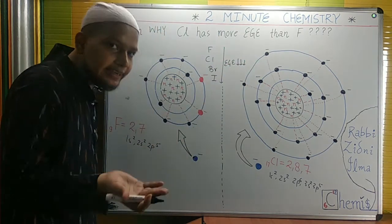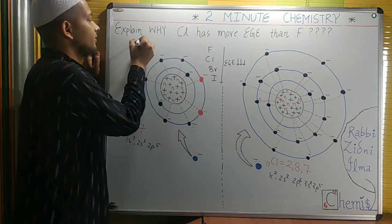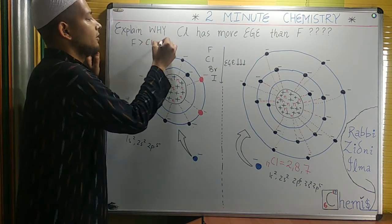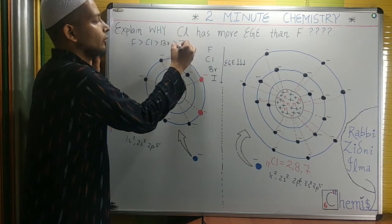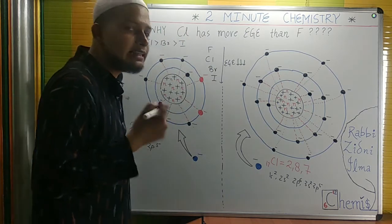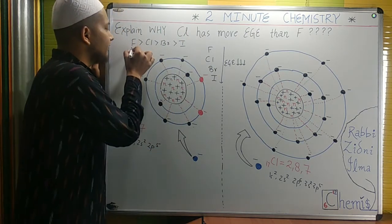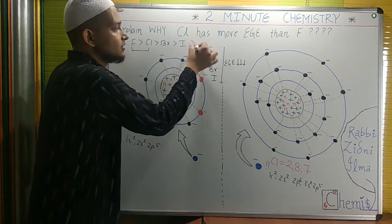So the expected order is fluorine, then chlorine, then bromine, then iodine. But this order is not followed by fluorine and chlorine, and it is not correct.